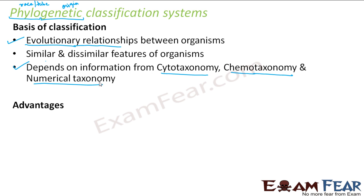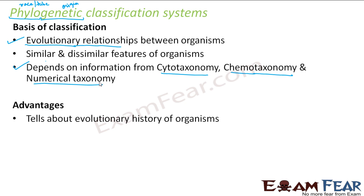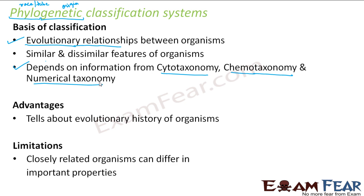Let us talk about the advantages of this classification system. It tells about the evolutionary history of organisms, since everything is based on evolutionary history and the origin of different organisms. Regarding its limitations, closely related organisms can also differ in some important properties. However, this limitation was not as severe as with the natural classification system. So the phylogenetic classification system turned out to be the best classification system so far, and that is what we have been following even now.